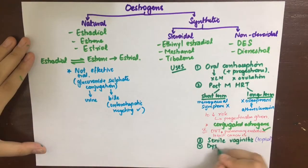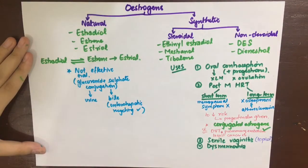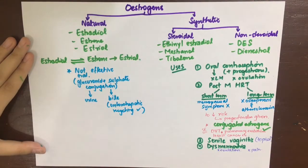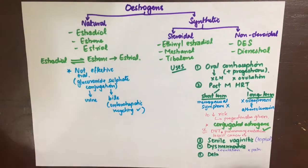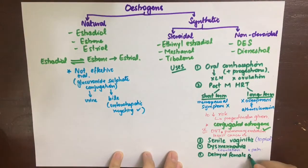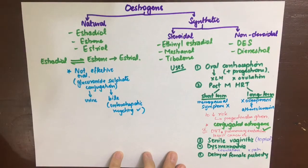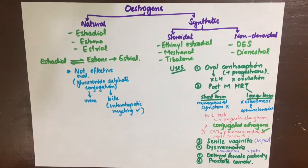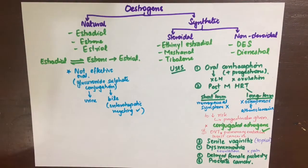Estrogens can also be used in senile vaginitis — postmenopausal inflammation and atrophy of vaginal tissue due to decreased estrogen — applied topically. They are also used to relieve dysmenorrhea (painful muscle cramps), where estrogen and progesterone together inhibit ovulation by negative feedback, producing anovulatory cycles without pain. Cyclic estrogen therapy can also be given in delayed puberty in females, especially those with Turner syndrome or hypogonadism, with the main goal of decreasing osteoporosis risk and developing secondary sexual characters.